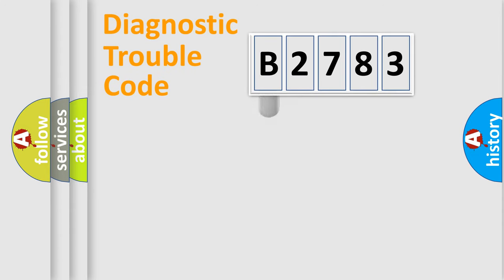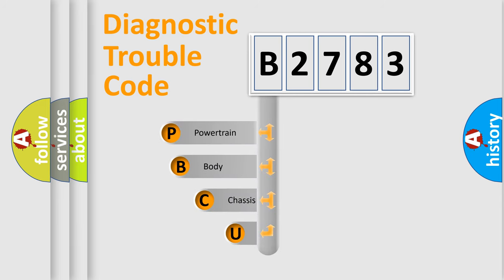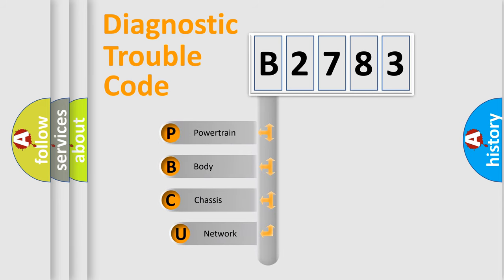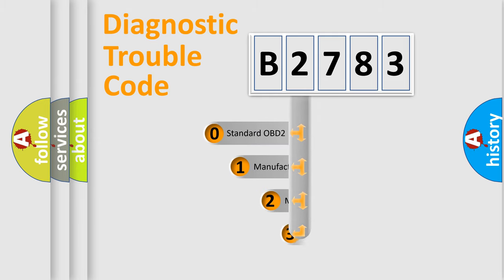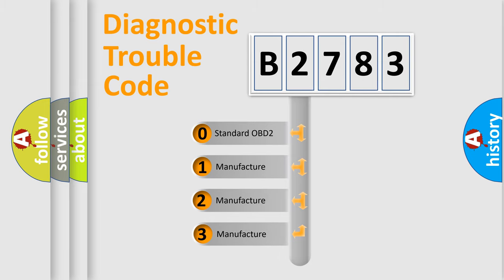Let's look at the history of diagnostic fault code composition according to the OBD2 protocol, which is unified for all automakers since 2000. We divide the electric system of the automobile into four basic units: Powertrain, Body, Chassis, and Network. This distribution is defined in the first character of the code.